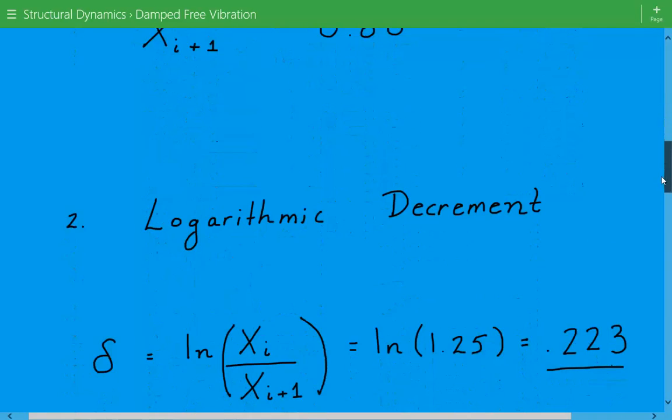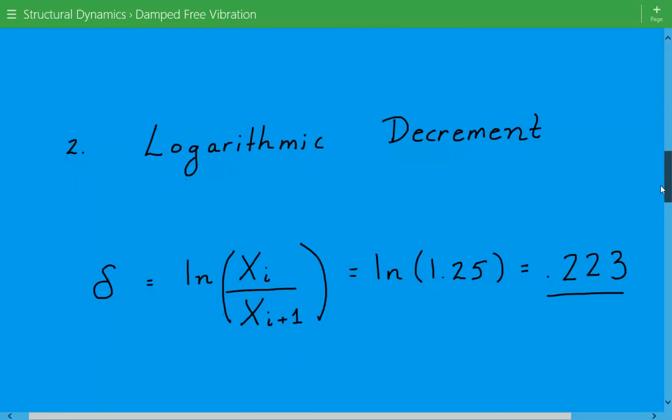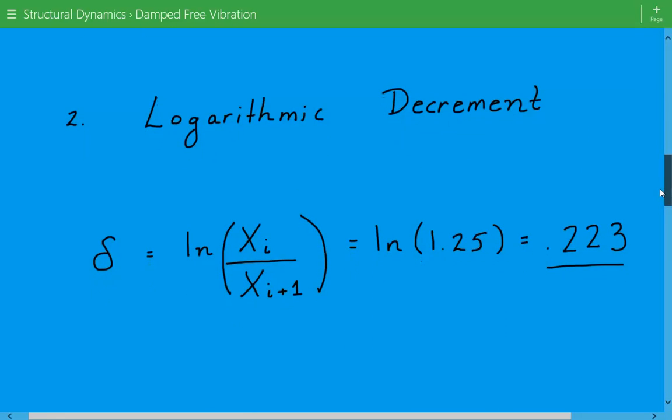Next, we need to calculate the logarithmic decrement, delta, and that's equal to the natural log of the ratio of the two successive vibration amplitudes, so that's equal to the natural log of 1.25, which is equal to 0.223.